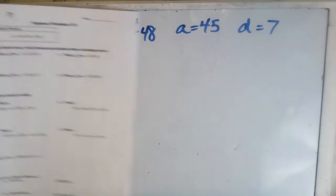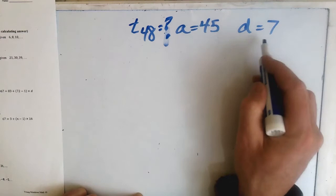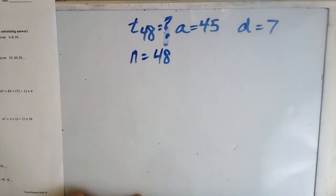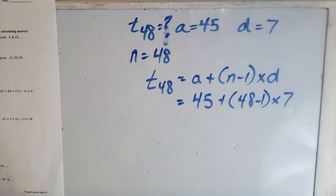The third question: we're given two pieces of information. We're asked to find T48, the 48th term, and we have A equals 45 and D equals 7. N is the hardest one to find — it's the small number attached to the T, which is 48. Now we use the formula; all the numbers are on one side, so we plug it into the calculator to find the answer.